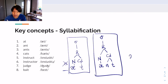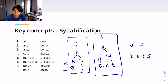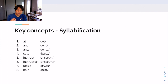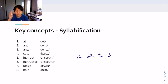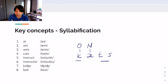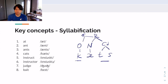Third problem: 'ants.' Again we have four segments, no onset, the vowel is the nucleus, and all three consonants are part of the coda. The nucleus and coda join together to form a rhyme, then connect to the syllable node. Fourth problem: 'cats.' You will figure out that there is an onset and coda in this syllable. Find the nucleus first, then get the onset. All other consonants serve as the coda. Join nucleus and coda to form the rhyme, then rhyme and onset to form the syllable.